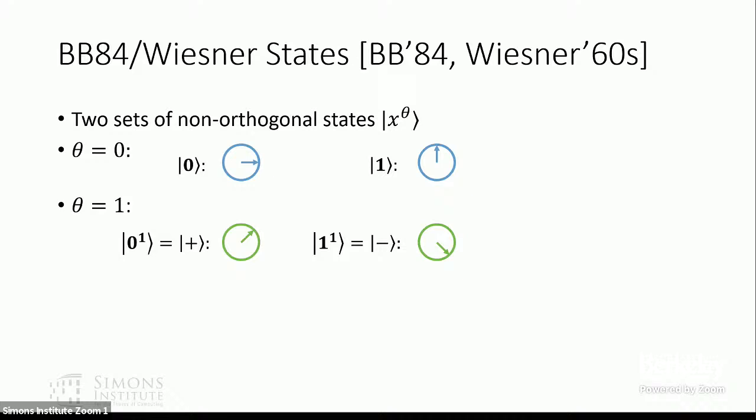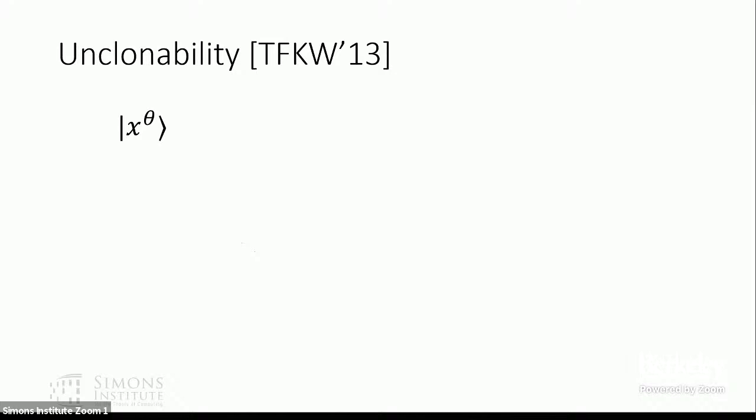BB84 states consist of two sets of non-orthogonal states. The parameter theta indicates the basis: if theta is zero we're in the computational basis, and if theta is one we're in the Hadamard basis. The states can be either |0⟩, |1⟩, |+⟩, or |−⟩. We use x_theta to denote a sequence of BB84 states, where for example x can be 010 and theta can be 110, encoding a sequence of BB84 states.